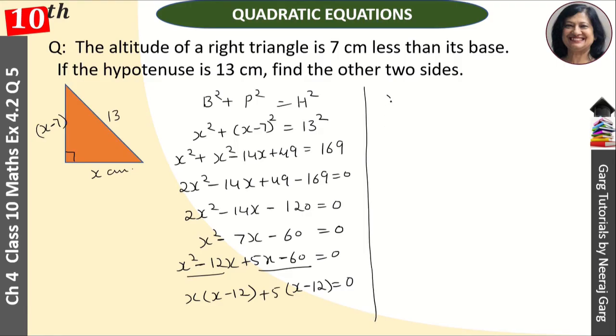So next step, x minus 12 is here and x plus 5 is in one bracket, that is equal to 0.